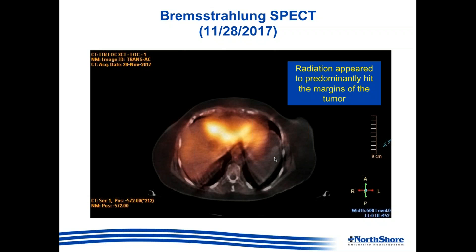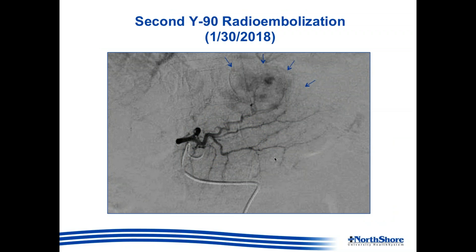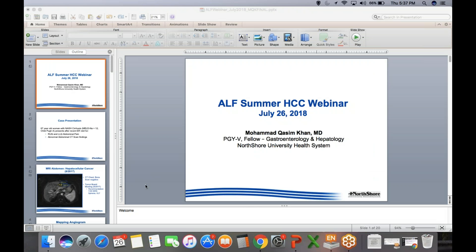The mapping angiograms and imaging were reviewed by our interventional radiologist, and it was determined that the catheter was placed distal to the point of bifurcation of the left hepatic artery at the time of Y-90 radioembolization. Thus it was necessary to perform Y-90 radioembolization again in the correct vessel. The patient was called back in, the other left hepatic artery branch was now cannulated, contrast was injected, and now you can see a much more prominent tumor blush.